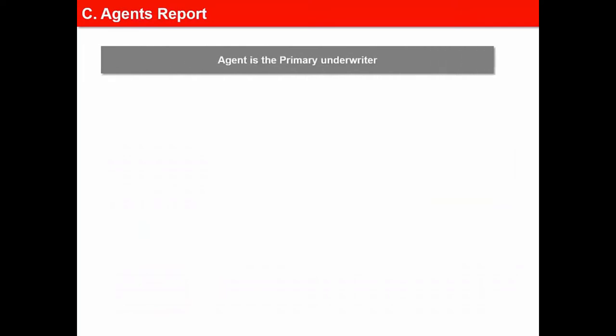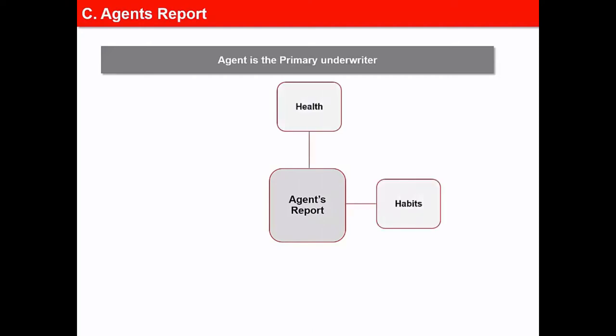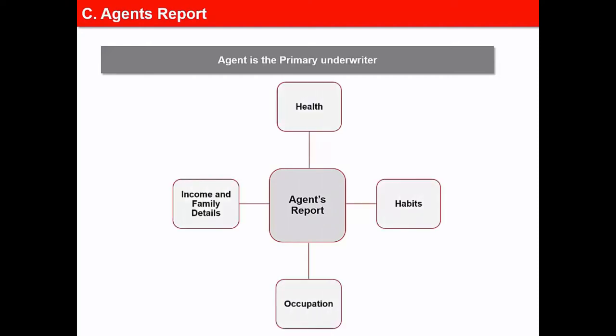The agent is the primary underwriter. All material facts and particulars about the policyholder need to be revealed by the agent in his or her report. Matters of health, habits, occupation, income and family details need to be mentioned in the report.